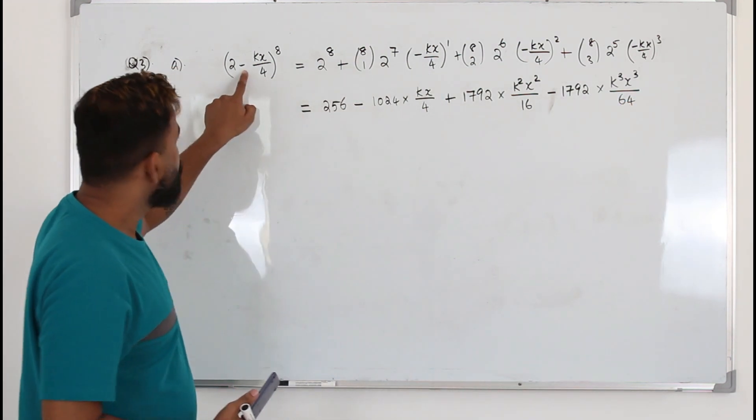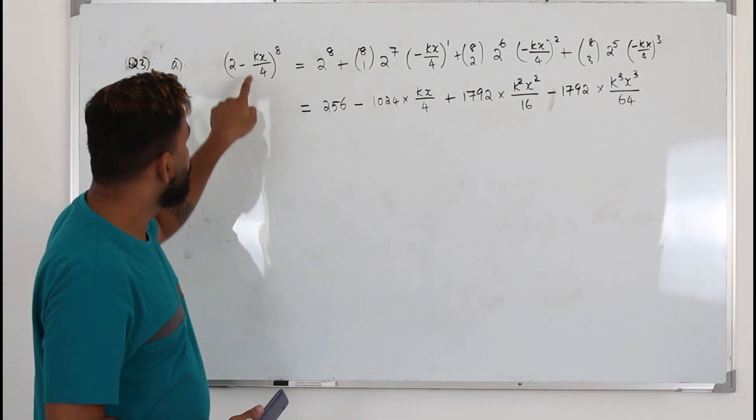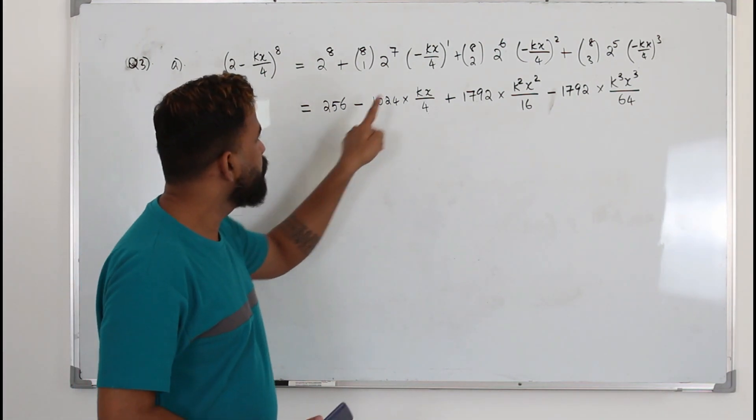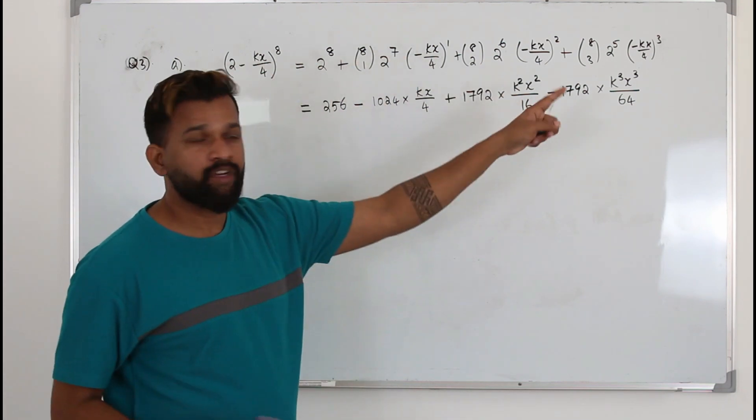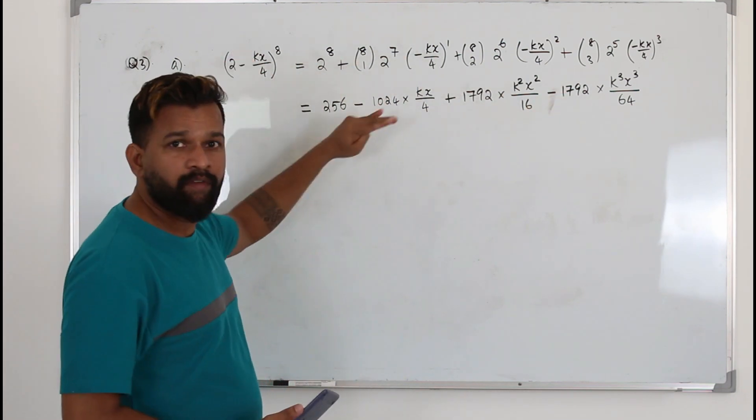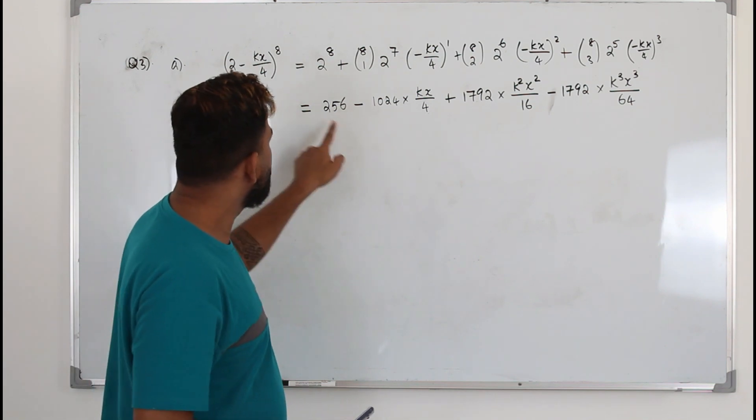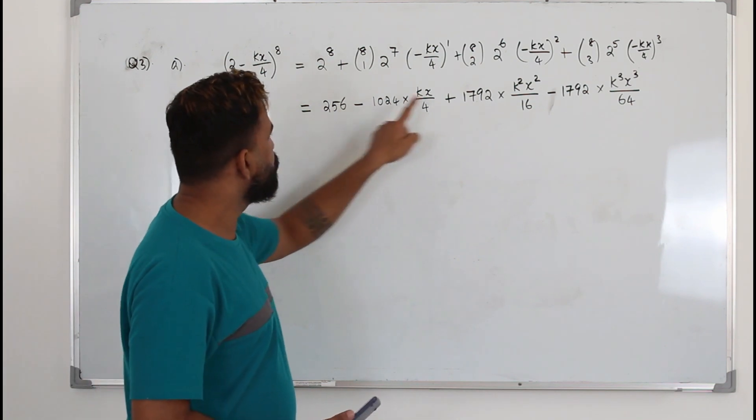8C3 times kx^3 over 4^3. Did you all notice this? When you have a negative sign in between, you will have alternative signs here. So if you want, you can do that. Just find the expansion normally, ignoring this sign. But when you write the answer, put the alternative signs, starting from positive, positive, negative, positive, negative.